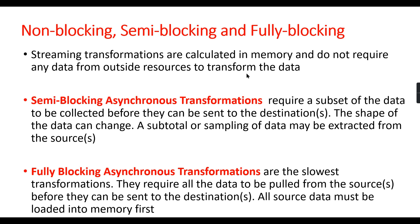Non-blocking transformations don't require any additional memory or output processes — they just get the data, transform it, and send it back as output. Most transformations like Derived Column and Copy Column are non-blocking and can be considered synchronous non-blocking. The second category is semi-blocking asynchronous transformations, which require a subset of data to be collected before it can be sent to a destination.